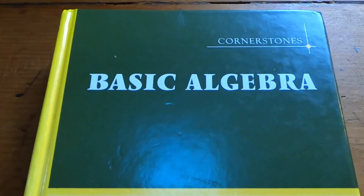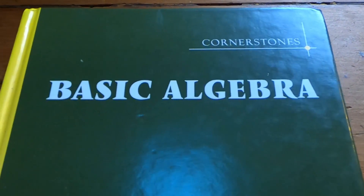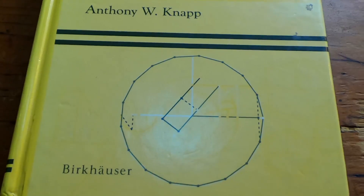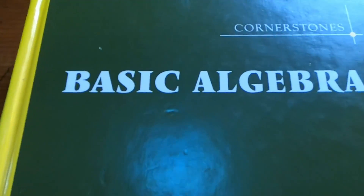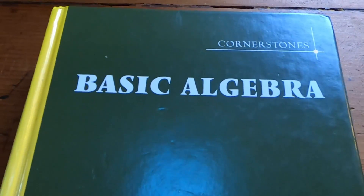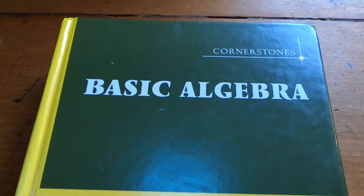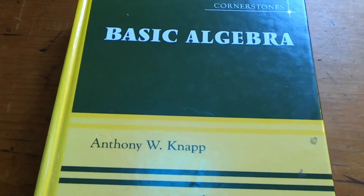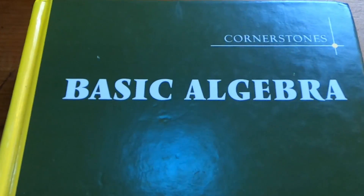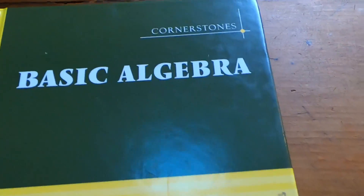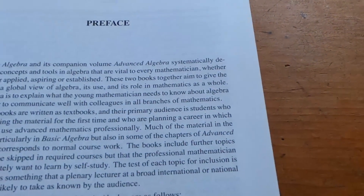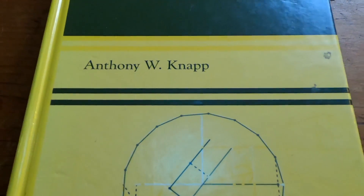This is a book I actually used for a course and did exercises from as homework problems. It's a graduate-level book — do not let the name confuse you. It's called Basic Algebra by Anthony Knapp. I remember taking it to work one day and someone thought it was about quadratic equations. No — this is a hardcore book with a lot of good information in it, and at some point I will do a review on it.